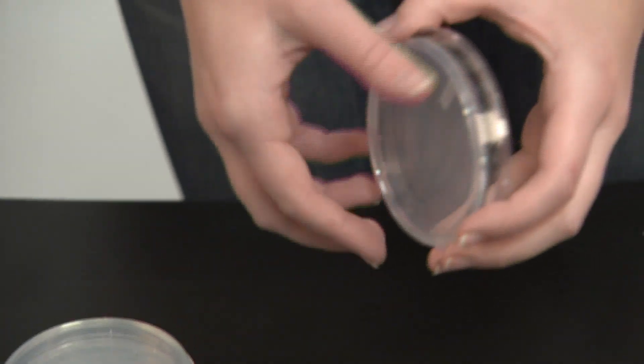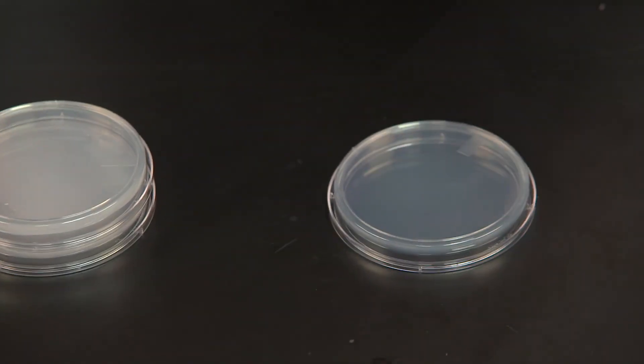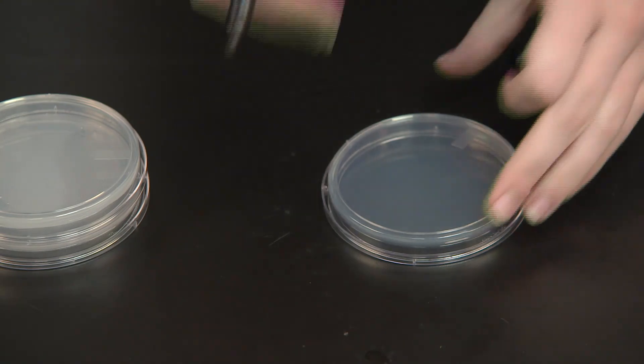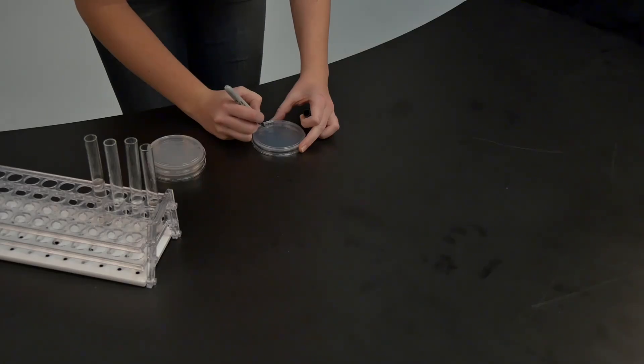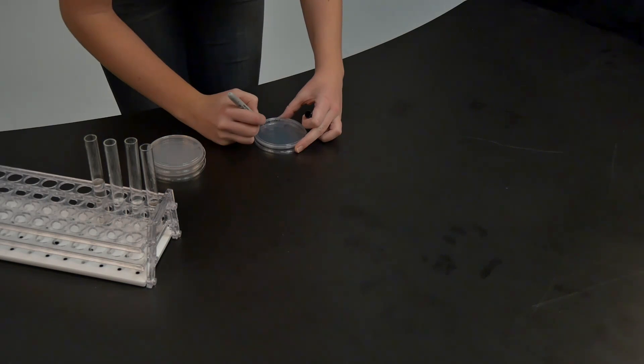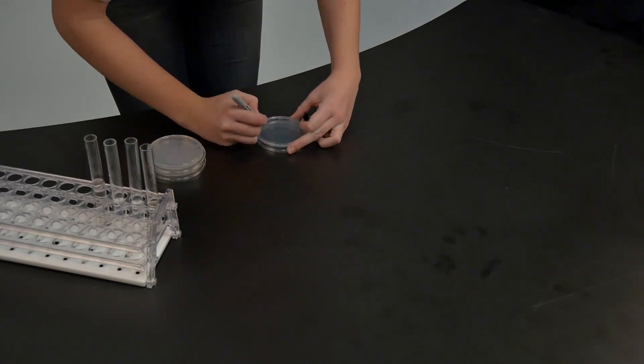First, let's label each of our plates. We ask that you write your information on the bottom of the plate and never on the lid because sometimes lids can come off or be switched. Please write small and along the edge of the plate so as not to prevent your ability to see the bacteria growing.